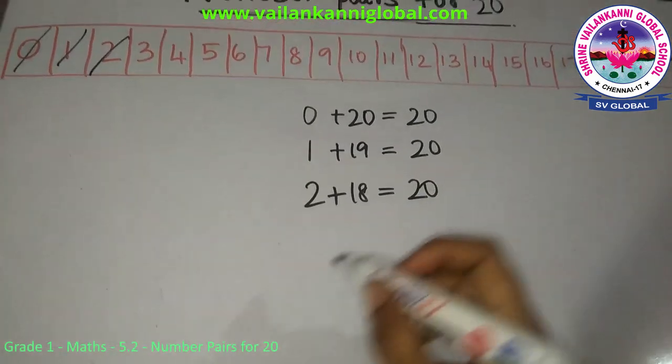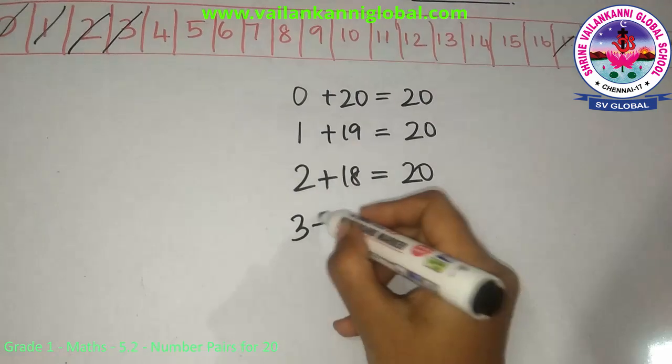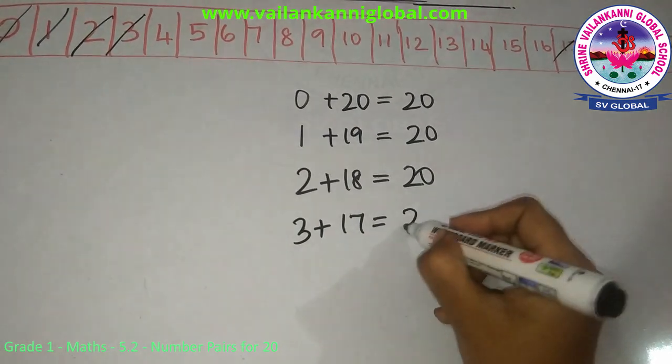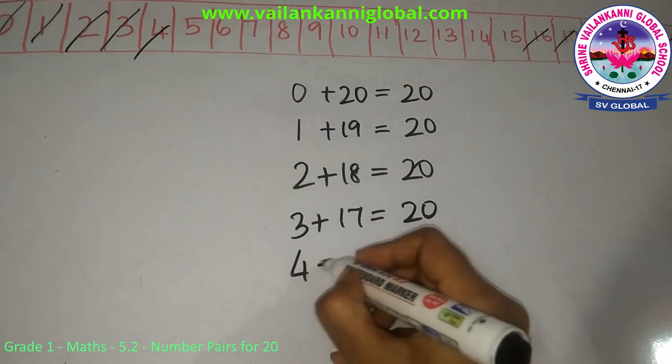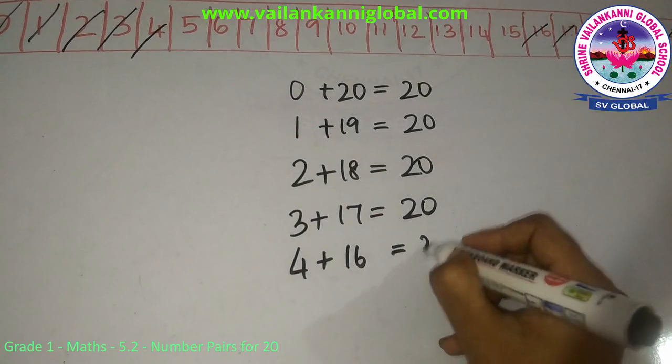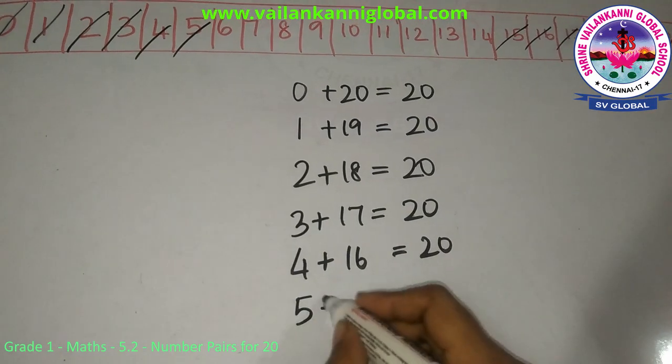Same way, 3 plus 17 gives me 20, 4 plus 16 gives me 20, 5 plus 15 gives me 20.